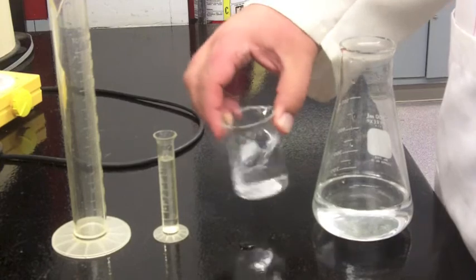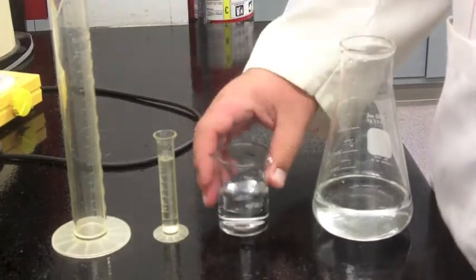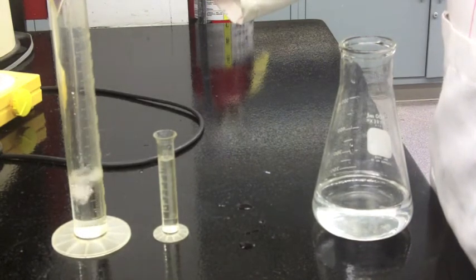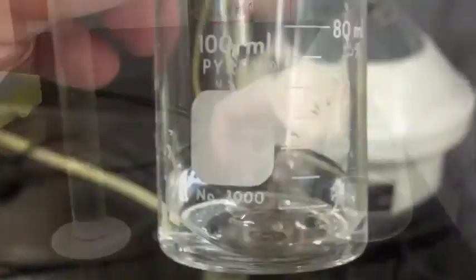Now a beaker doesn't swirl nearly as well. You can do it if it's not very full, but it does become an issue. But it's got that lip, which makes it really good for pouring. So a beaker's strength is in its ability to transfer liquids.